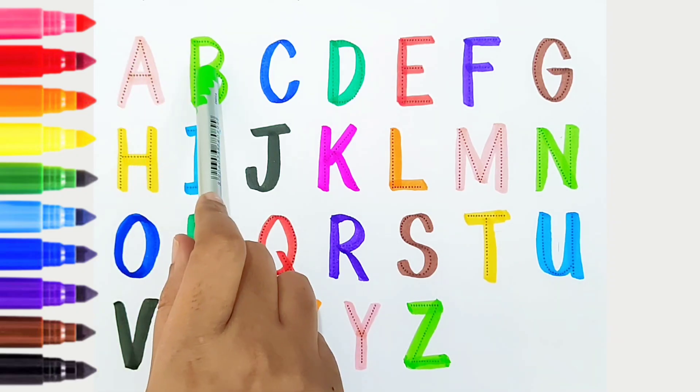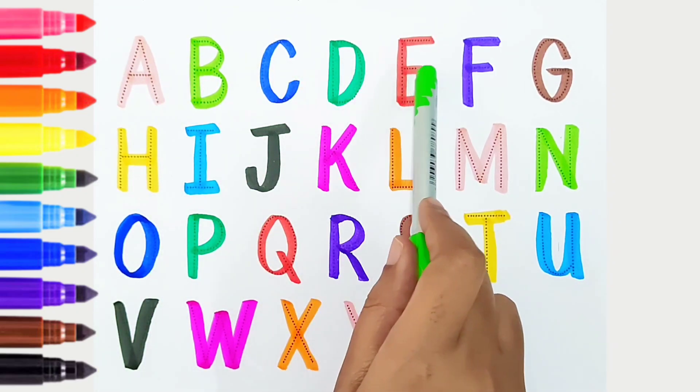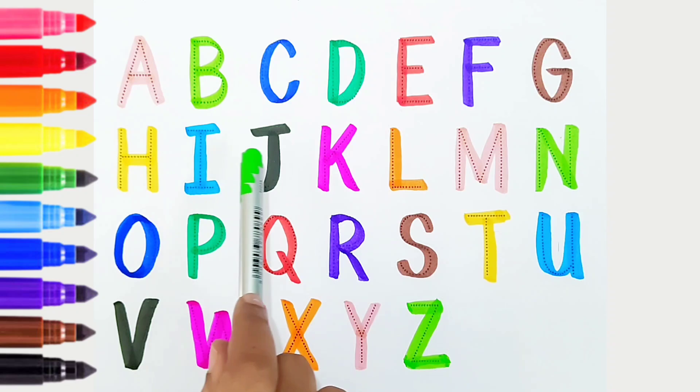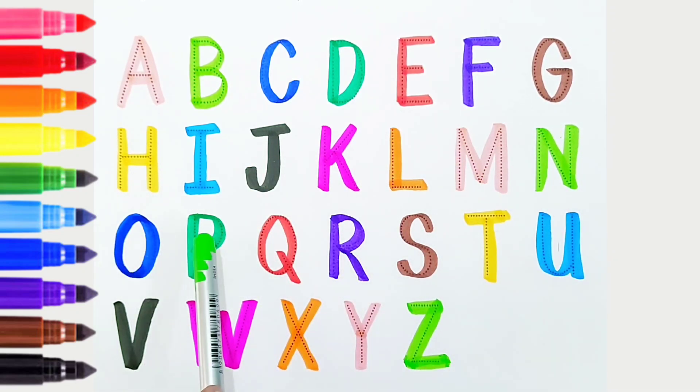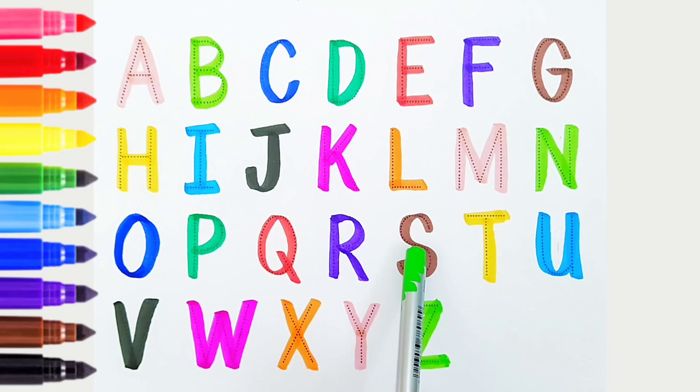Z is for xylophone. A-B-C-D-E-F-G-H-I-J-K-L-M-N-O-P-Q-R-S-T-U-V-W-X-Y-Z. Happy learning, kids!